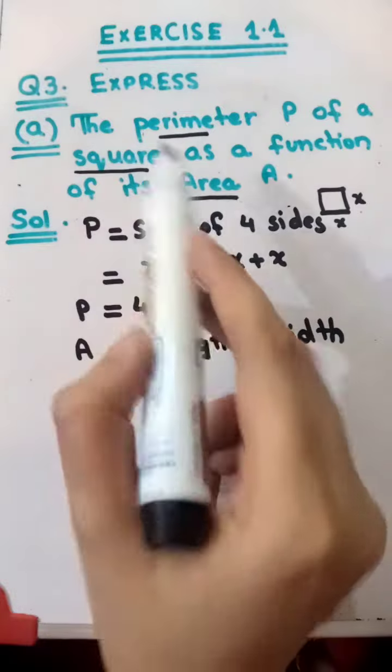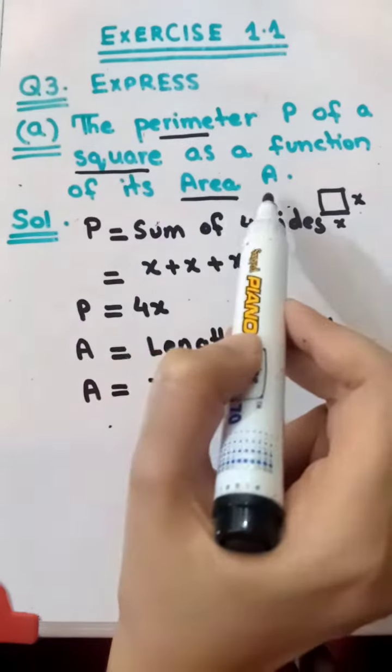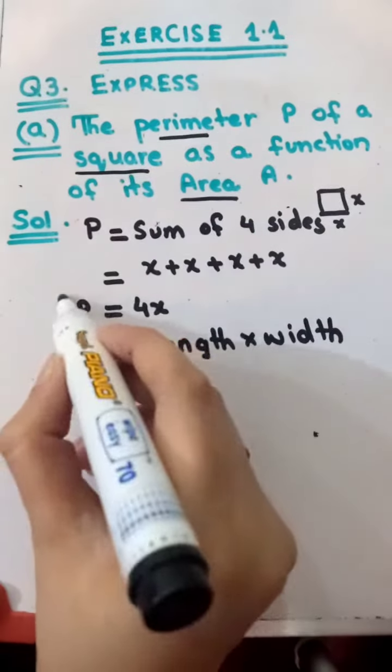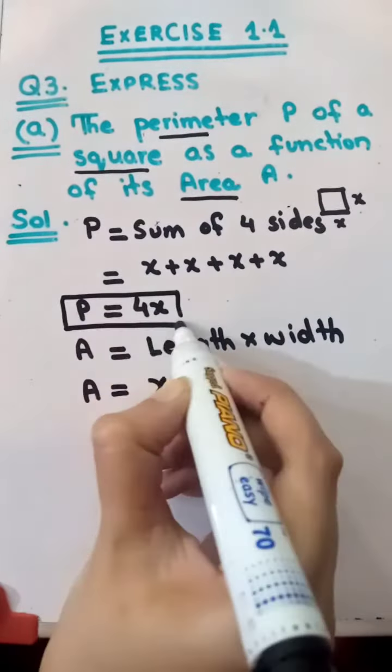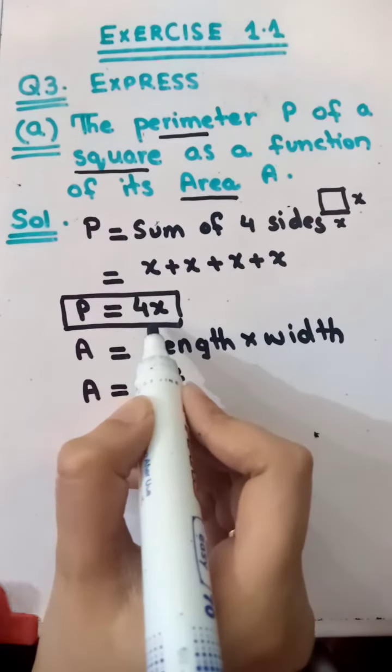Now we have the question: express the perimeter P of a square as a function of its area A. We have to express perimeter. We will put the value in the perimeter. Which value? The value of x that we will take from the area.